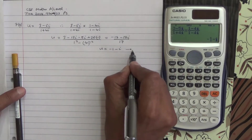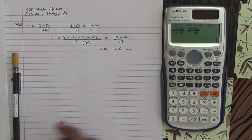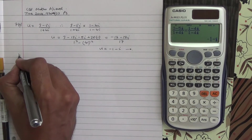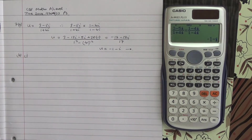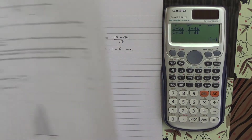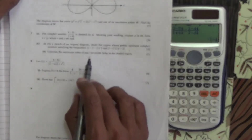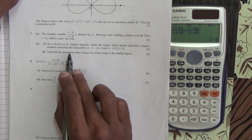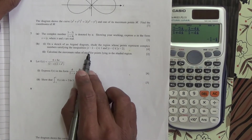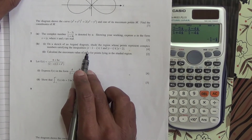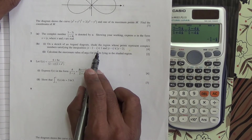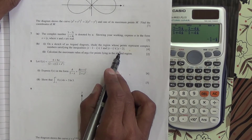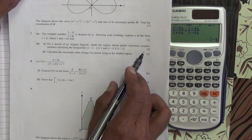That's the first part. For the second part, part B of the question, on a sketch of an Argand diagram, shade the region whose points represent the complex numbers satisfying the inequalities: the modulus of (z minus 2 minus i) less than or equal to 1, and the modulus of (z minus i) is less than or equal to the modulus of (z minus 2). 4 marks.